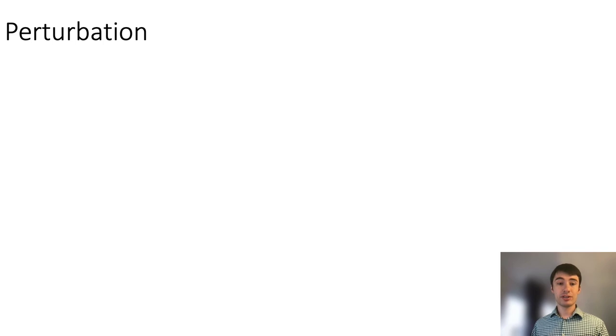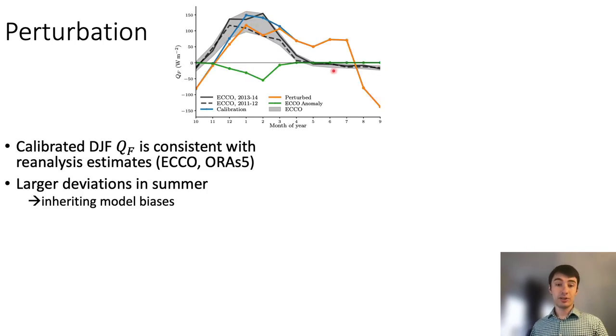How does this calibrated Q-flux compare to other datasets? In the gray shading in the top plot here, you can see the distribution of North Atlantic Q-flux in DJF from the ECCO reanalysis. The black lines, in particular the solid black line which represents the 2013-14 season, you can see that it was, in most months, the most positive year.